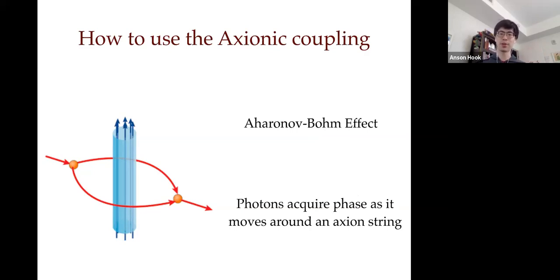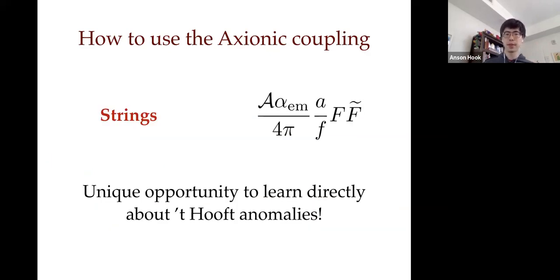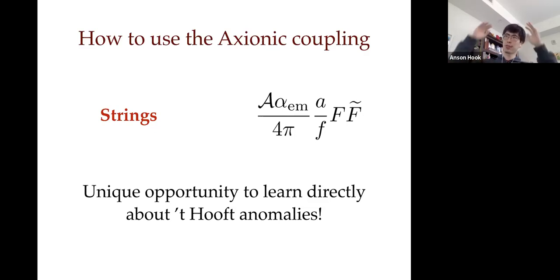Circularly polarized photons acquire a phase analogously to how an electron's phase depends on particle versus antiparticle — here circular polarization is what matters. If you have axion strings and this coupling to photons, there's a unique opportunity to learn about the 't Hooft anomaly, which teaches you about the fundamental value of electric charge — something about the ultraviolet that you can't necessarily access at low energies.